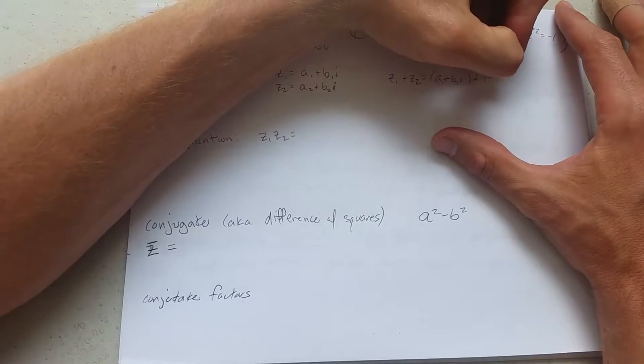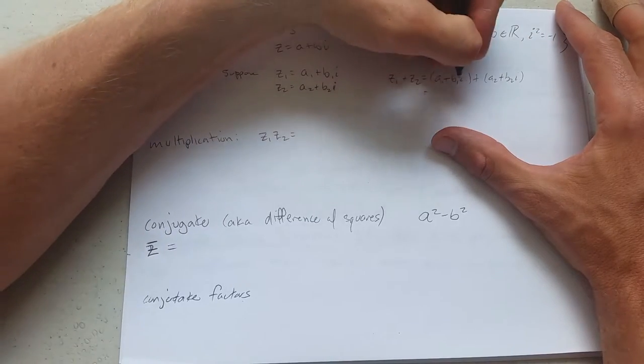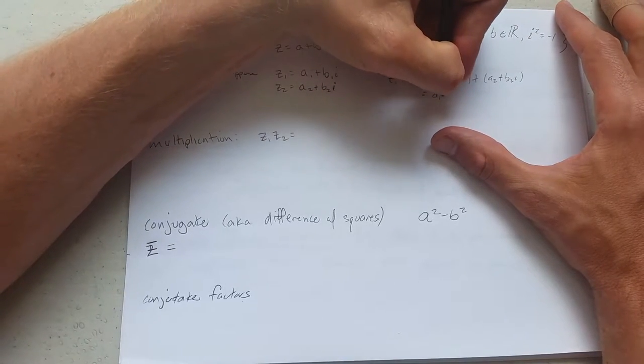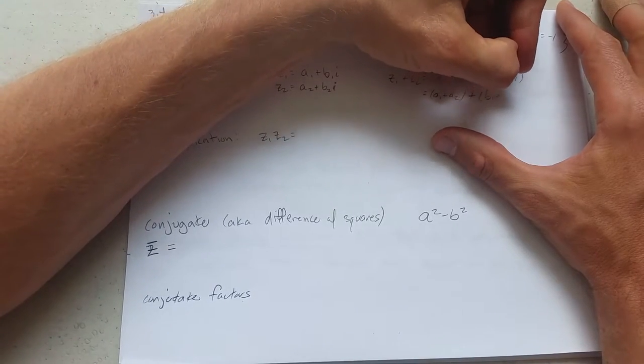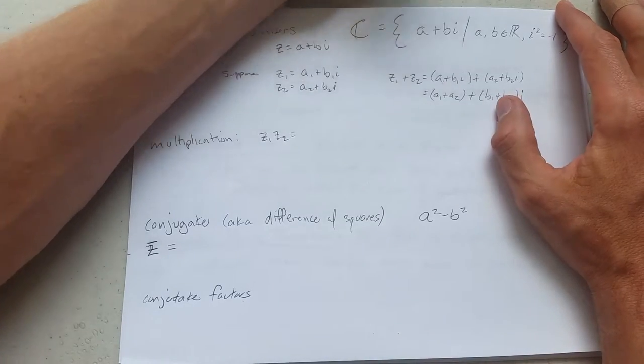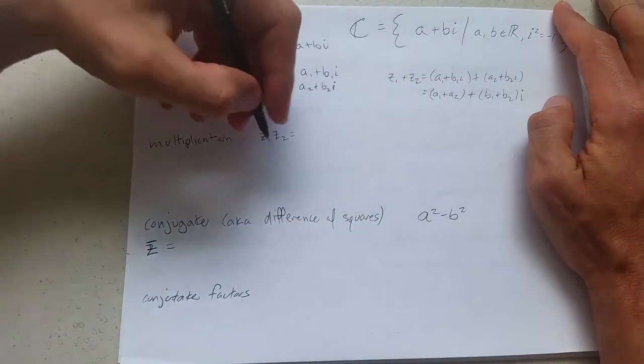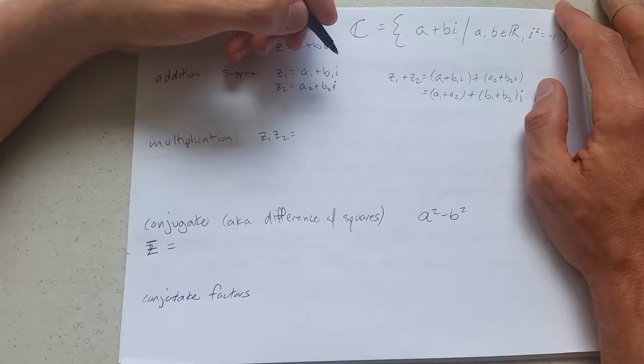There's the first number, second number a2 plus b2i. You add them together, add the a's, a1 plus a2 plus b1 plus b2i. That's it. You add the real parts, add the imaginary parts. That's how you add. It's not that tricky. Not going to do an example, it's pretty straightforward.